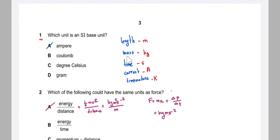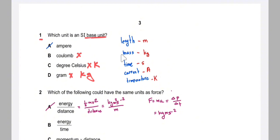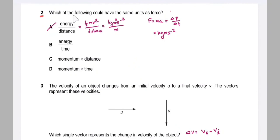The unit of length is metre, mass is kg, time is second, current is ampere, and temperature is Kelvin. So the correct SI base unit from the options: coulomb is not, degree centigrade is not (it would be Kelvin), gram is not (it would be kg), but ampere is the unit of current — so yes, ampere is an SI base unit.